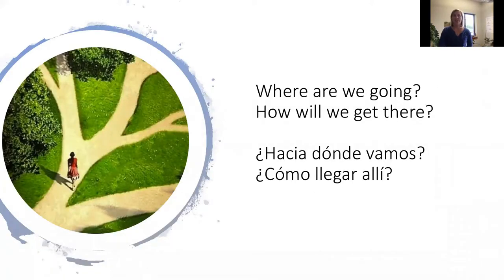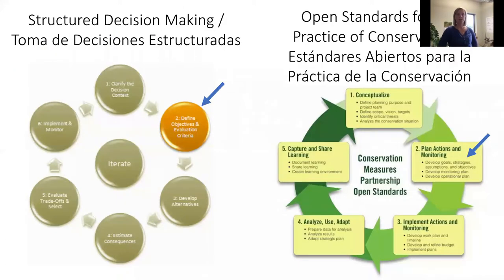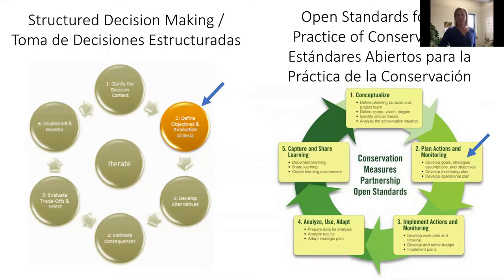At its core, focusing on our goals and objectives is about thinking about where we are going and how we are hoping to get there — and in particular, since a lot of the projects you are proposing are large group efforts, how do we make sure we're all on the same page, heading in the same direction, and taking the same path to getting there. This step of clearly defining goals and objectives is a key step in all kinds of structured planning processes, such as structured decision making or the open standards for the practice of conservation, as well as many other stepwise planning approaches.